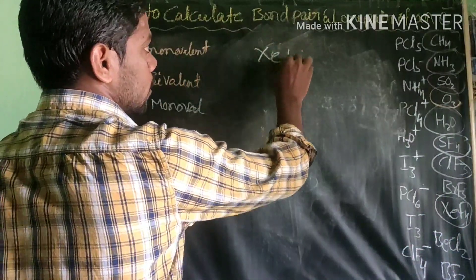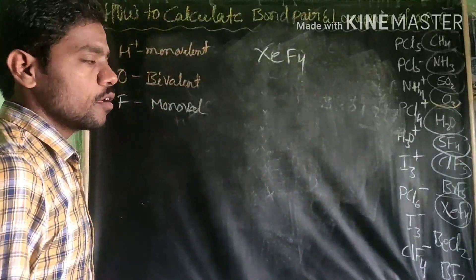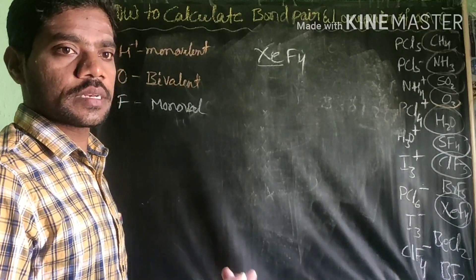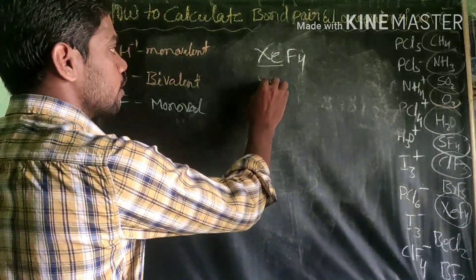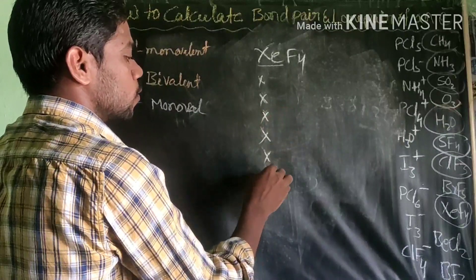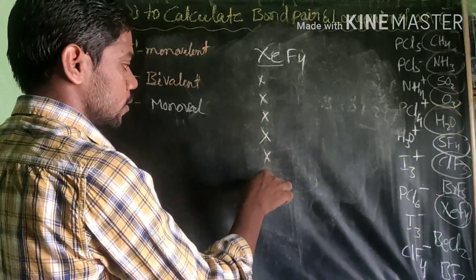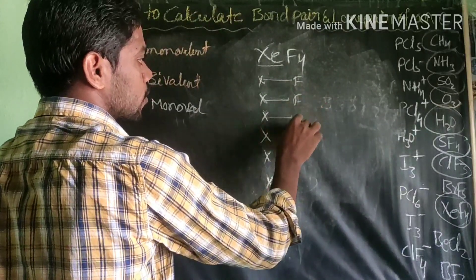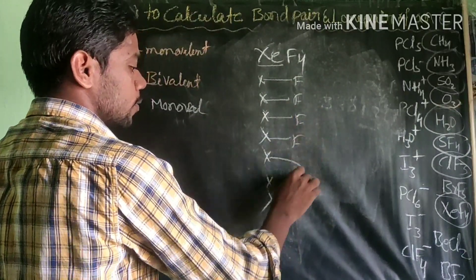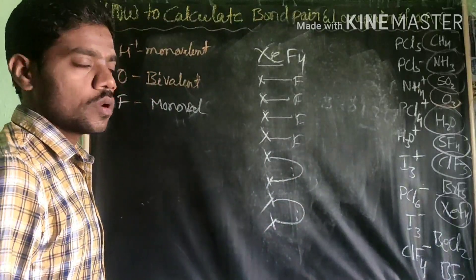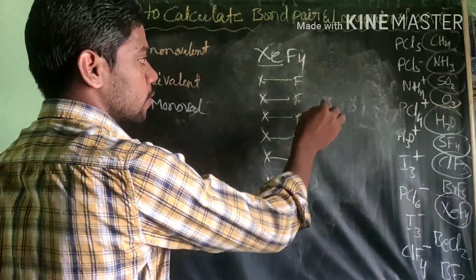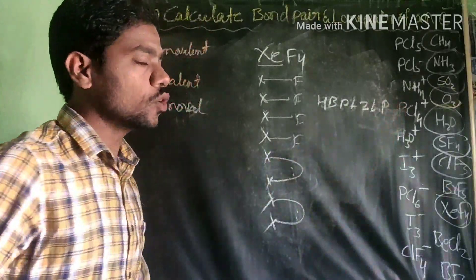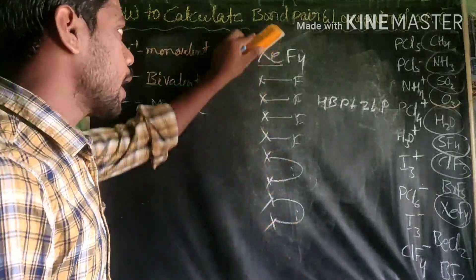Next, XeF4 — xenon tetrafluoride. Xenon is an 18th group element: 18 minus 10 gives 8 valence electrons. There are 4 fluorine atoms forming 4 bonds using 4 electrons, leaving 4 electrons — forming 2 lone pairs. Therefore, xenon tetrafluoride has 4 bond pairs and 2 lone pairs of electrons.